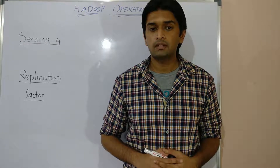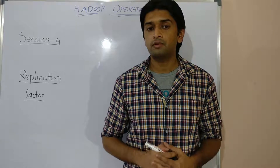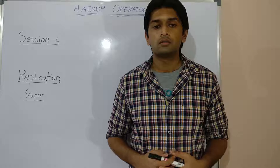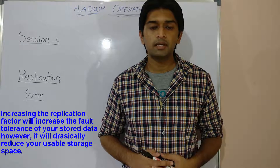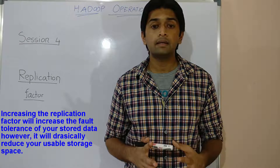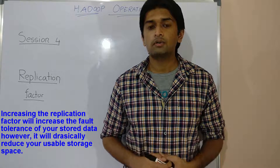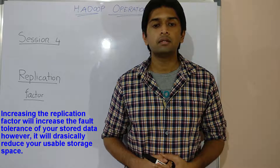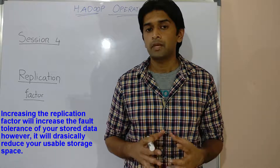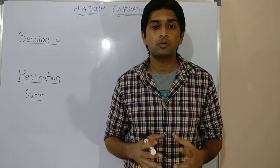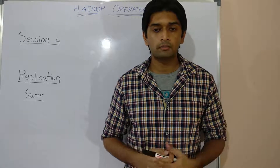The replication factor is configurable and can be set using the parameter dfs.replication in the HDFS configuration file. Increasing the replication factor increases fault tolerance capacity; however, it will drastically reduce usable storage space, as an equal amount of space must be allocated for storing copies or replicas.